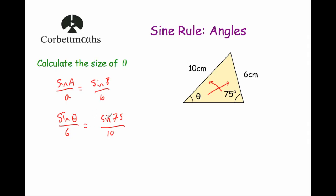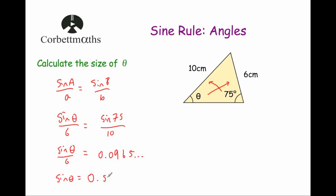So we can now work this out. I'm going to work out sine 75 divided by 10, so sine theta over 6 equals sine 75 divided by 10, and that's equal to 0.0965 and so on. I'm going to keep that on my calculator display. Now I'm going to multiply both sides of this equation by 6, so sine theta equals 0.0965 times 6, which gives me 0.57955 and so on.